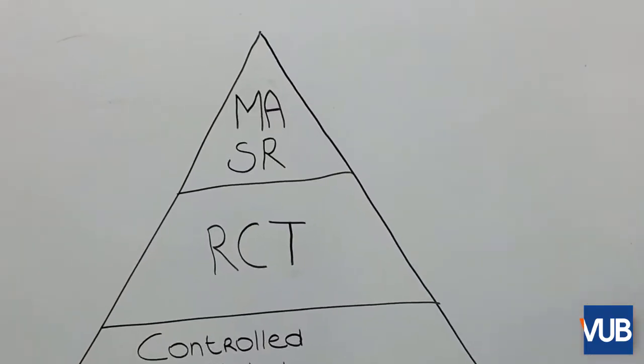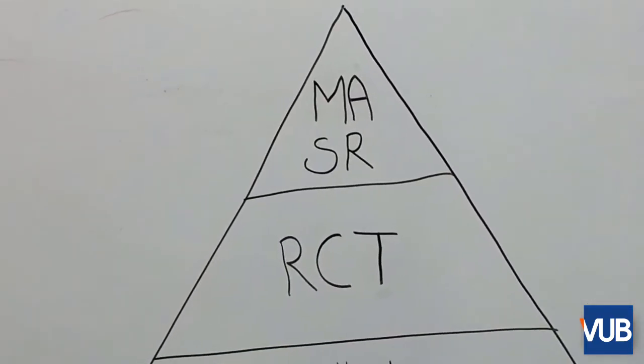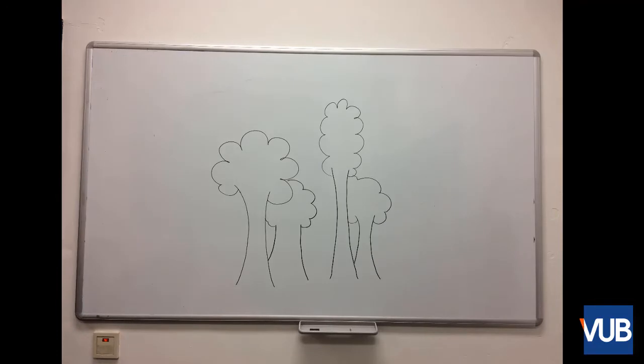A systematic review collects all the studies on a certain topic. In fact, a systematic review can be seen as the creation of a forest, where the studies are the trees. But the results of a systematic review can be quite confusing. You receive a pile of information and it's difficult to extract the exact knowledge you're looking for. It's like getting lost in a forest.